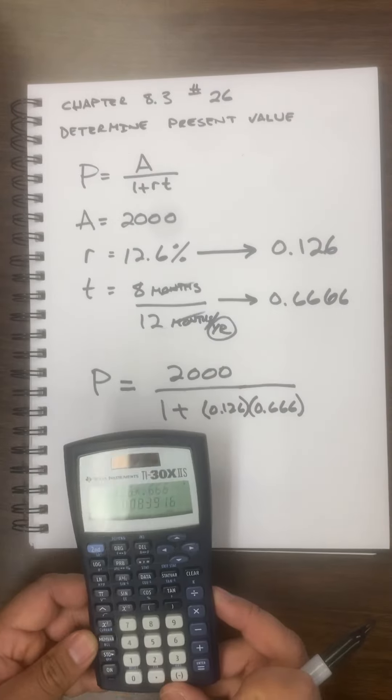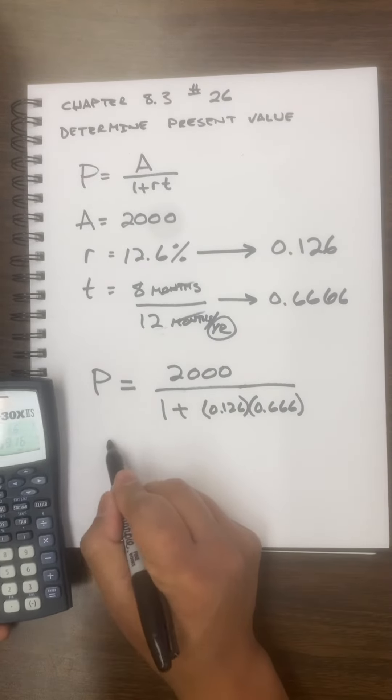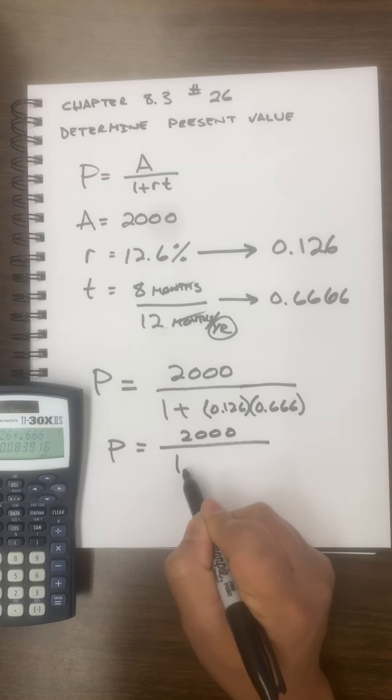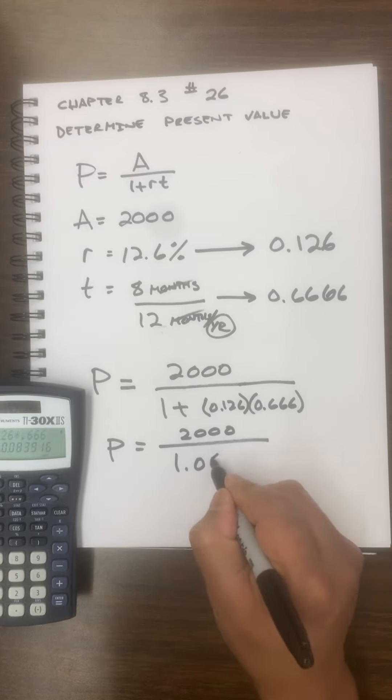There's my answer for the denominator. I'll write that down: P equals 2000 divided by 1.084.